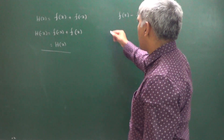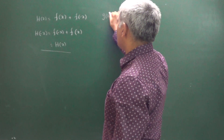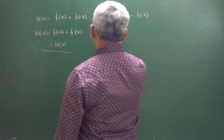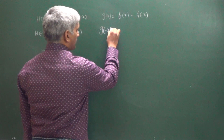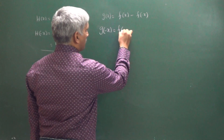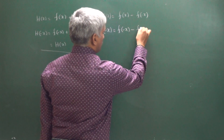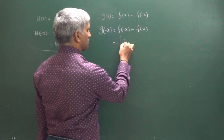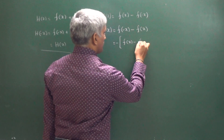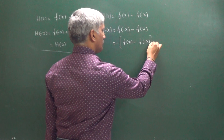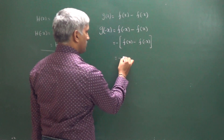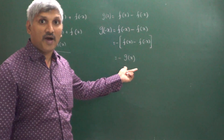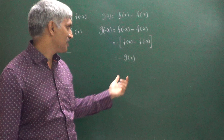Similarly, let g of x equal to f of x minus f of minus x. Find g of minus x: g of minus x equals f of minus x minus f of x. Taking minus common, we get minus times f of x minus f of minus x, which is minus g of x. So g of minus x equals minus g of x — therefore, f of x minus f of minus x is always an odd function.